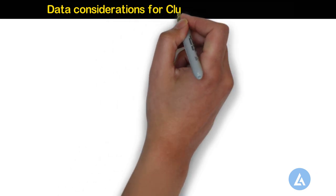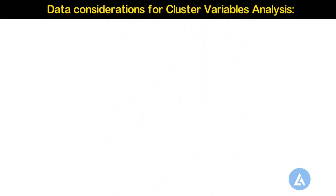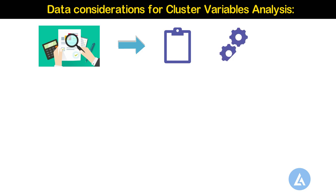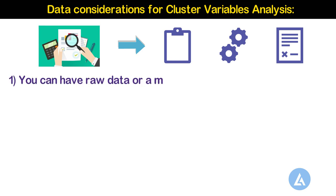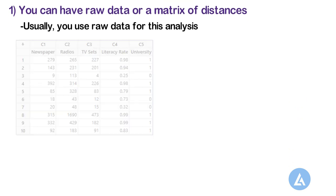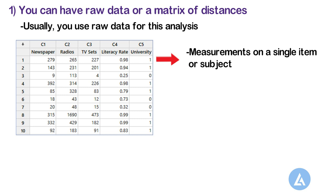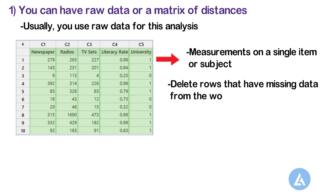Data Considerations for Cluster Variables Analysis. To ensure that your results are valid, consider the following guidelines when you collect data, perform the analysis, and interpret your results. The data consideration for Cluster Variables Analysis is the same as that of Cluster Observations Analysis. You can have raw data or a matrix of distances. Usually, you use raw data for this analysis. Each row contains measurements on a single item or subject. You must have two or more numeric columns, with each column representing a different measurement. You must delete rows that have missing data from the worksheet before you use this analysis.